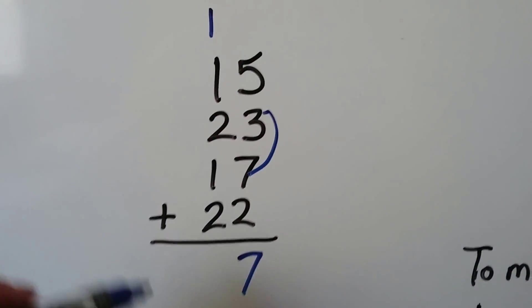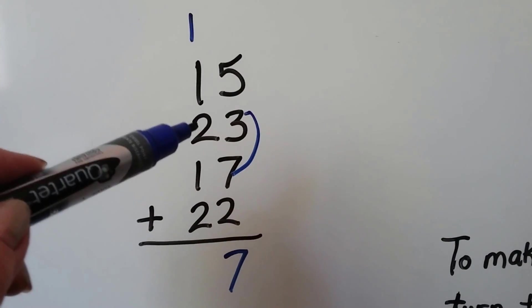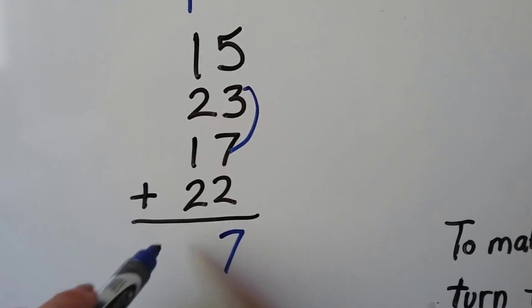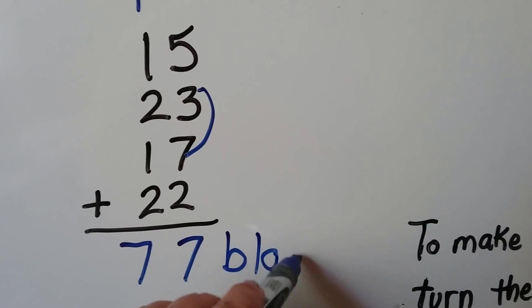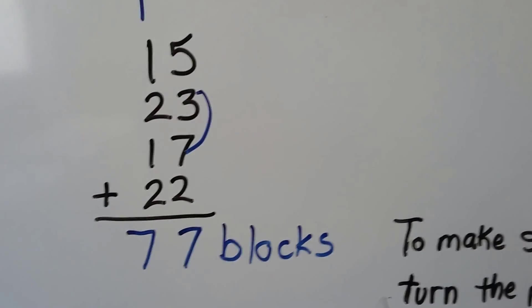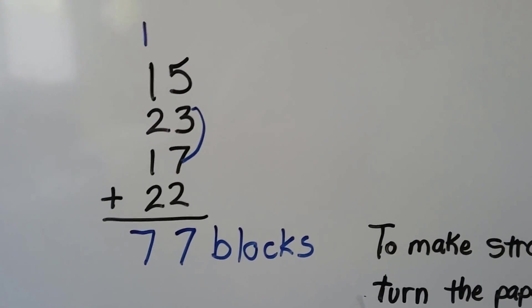Now we add the tens place. We have one, two, three, four, five, six, seven. Seventy-seven blocks. That's how far she rode all together. Make sure we label it. Seventy-seven blocks.